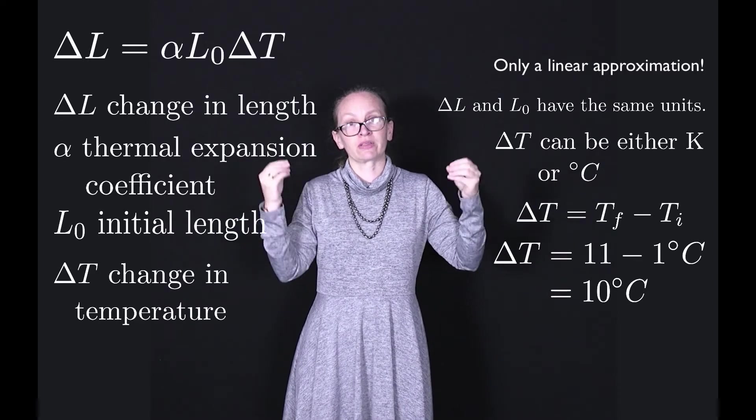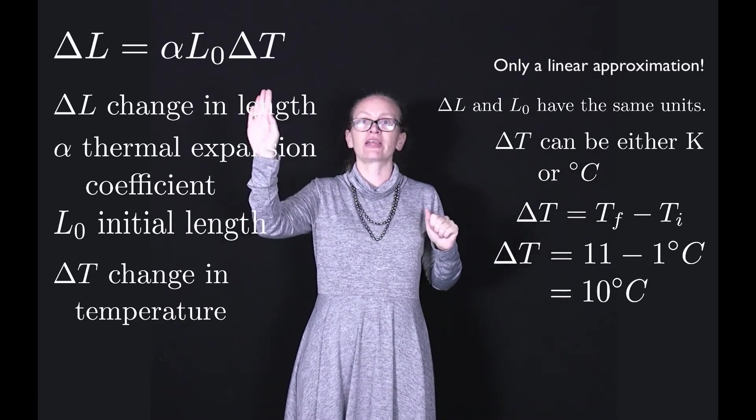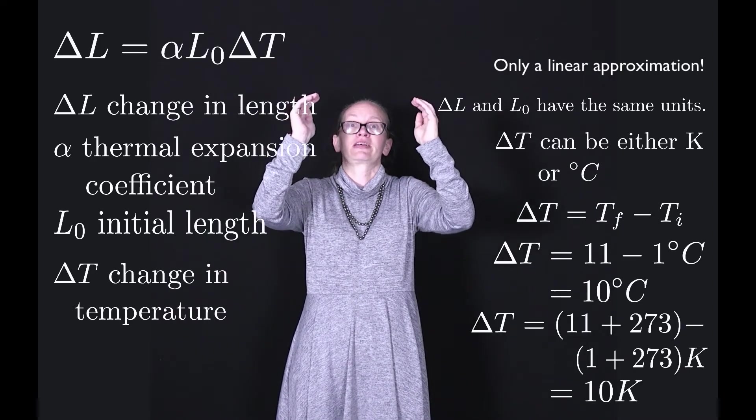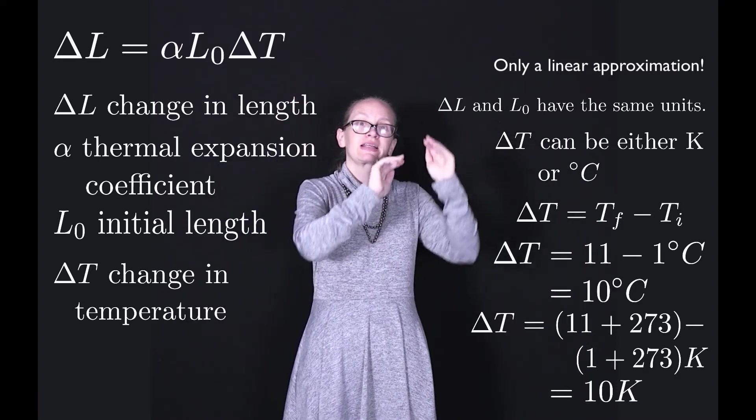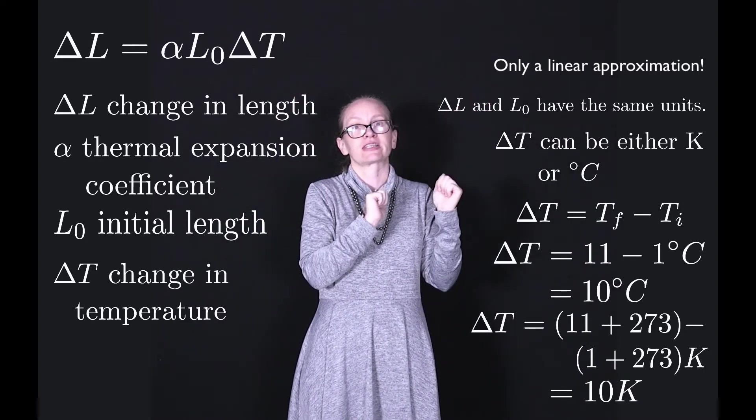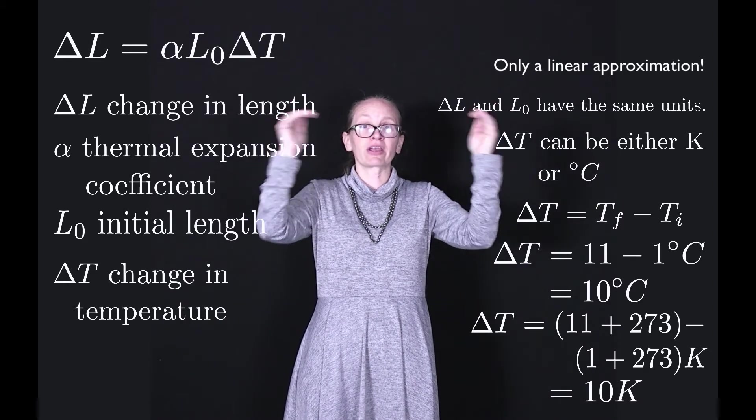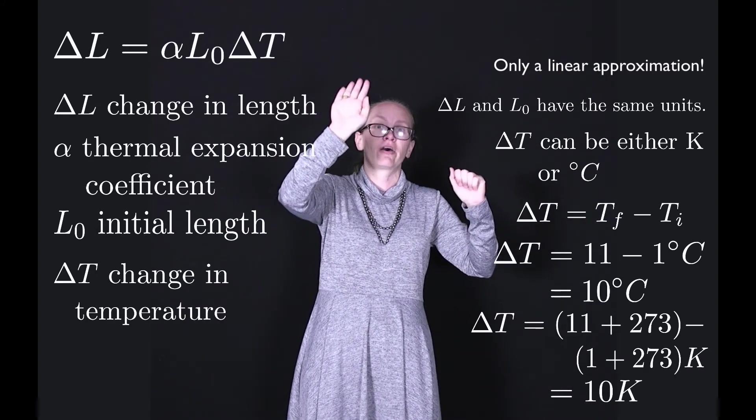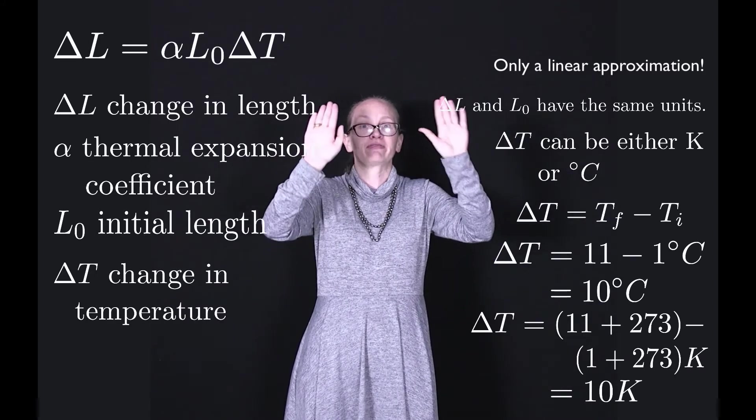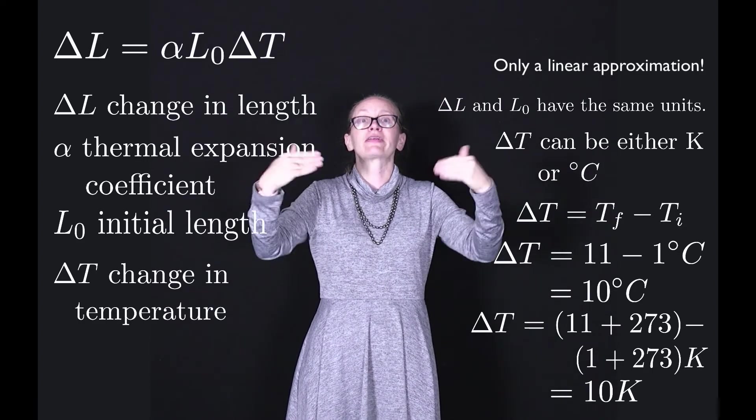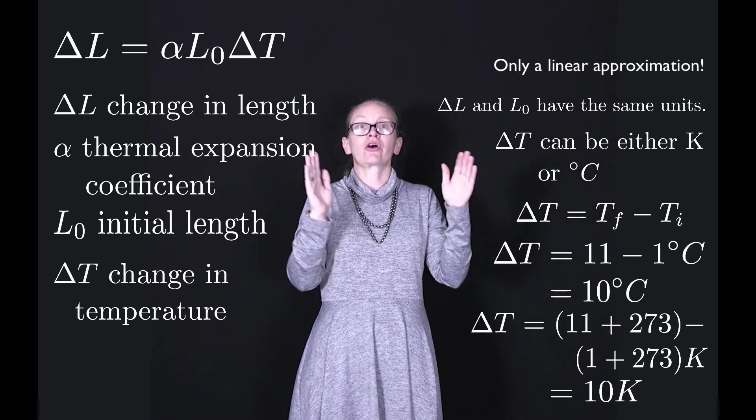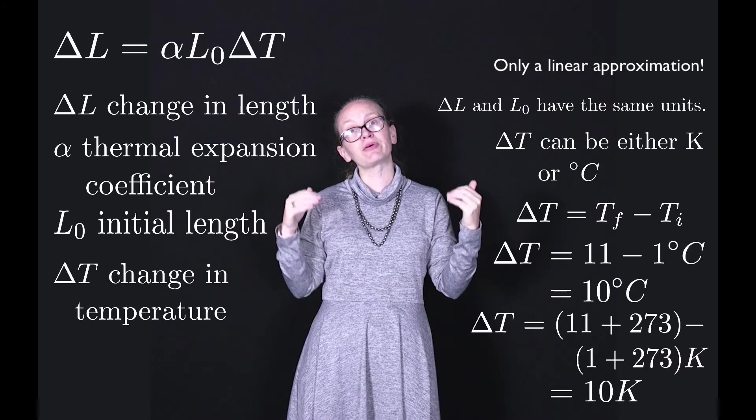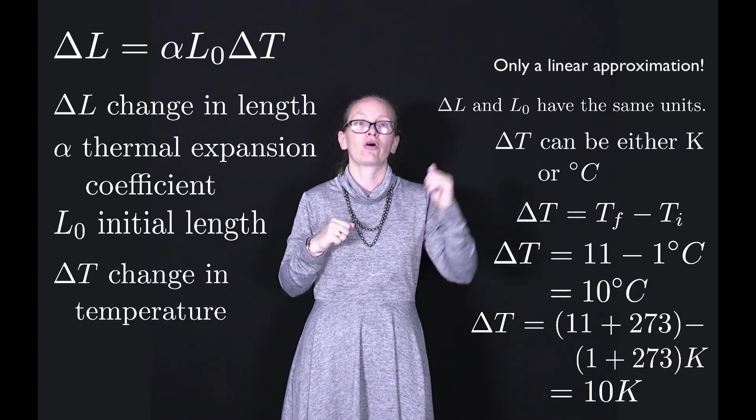If we wanted it in Kelvins, the change in temperature equals the final temperature, which is 11 plus 273 Kelvins, minus the initial temperature, which is 1 plus 273 Kelvins. When we work out the change in temperature, we've got the 273 in the first bracket and minus 273 from the second bracket, so those completely cancel out. The change in temperature in Kelvins is also 10 Kelvins. For changes in temperature, it doesn't matter if you use degrees C or Kelvins.